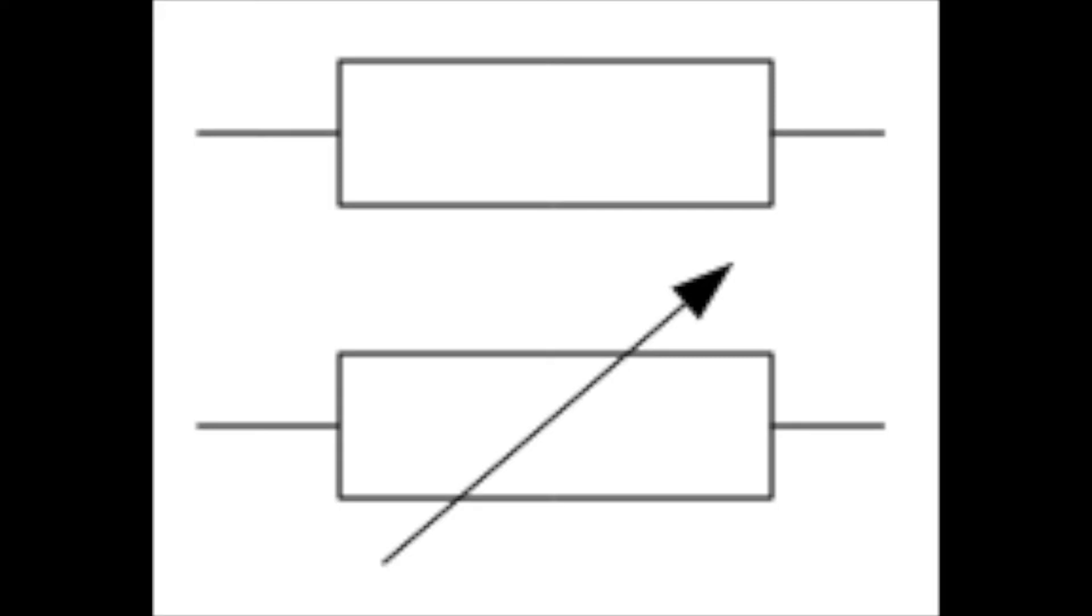A resistor limits the amount of current in a circuit. That's the one without an arrow through. The one with an arrow through is a variable resistor and that allows the current to be varied.